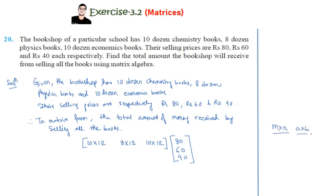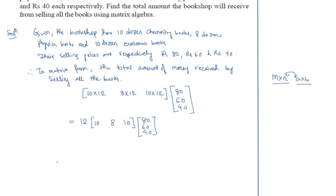That is the proper rule of matrix multiplication. Taking the factor of 12 out by the properties of matrices, we have the row matrix [10, 8, 10] multiplied by the column matrix [80, 60, 40]. The calculation is 10×80 + 8×60 + 10×40.